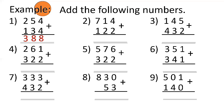Don't forget that we have to start adding numbers in ones place. 4 plus 2 is 6, 1 plus 2 is 3, and 7 plus 1 is 8. So the total of 714 and 122 is 836. Number 3: 145 plus 432.